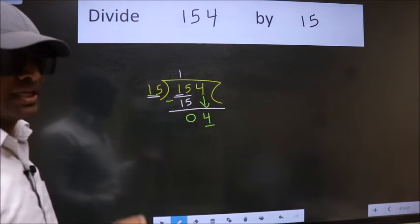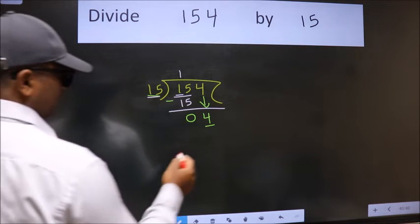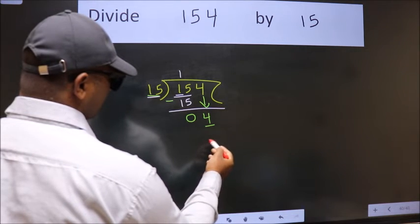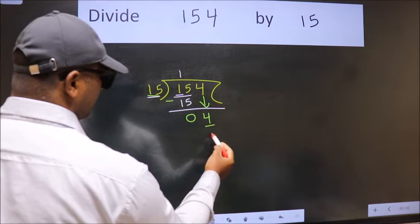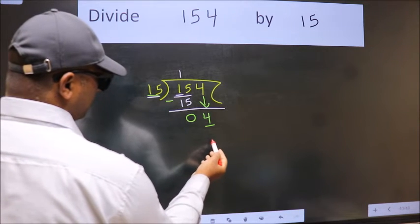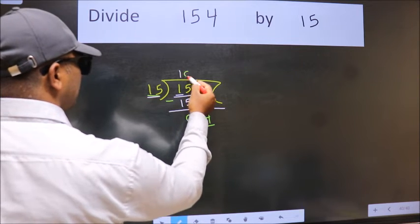Instead of that, what we should think of doing is which number should we take here. If I take 1, we will get 15, but 15 is larger than 14, so what we do is we take 0 here.